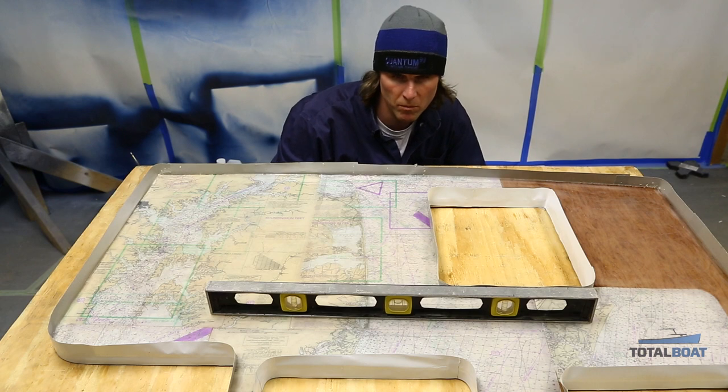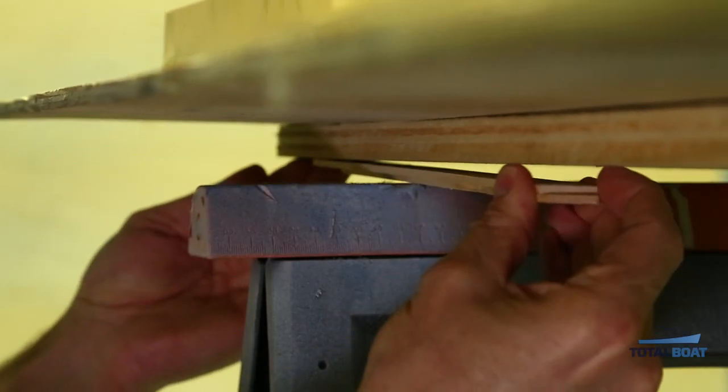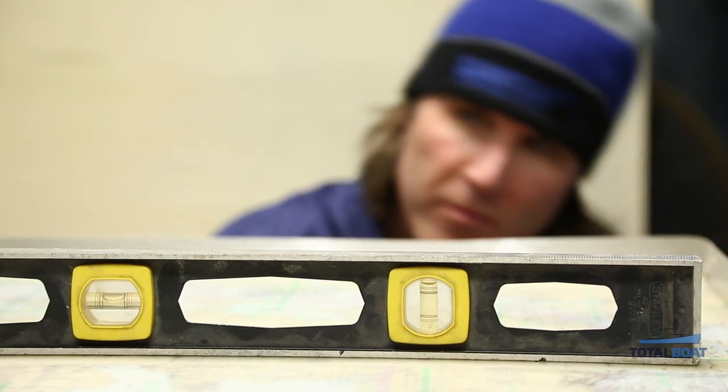The first step is to make sure that the surface is completely level. We've got a level here and we shimmed the corners of the table to make sure it was level in both directions.